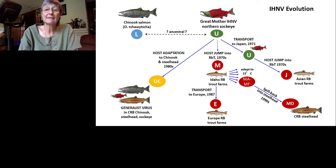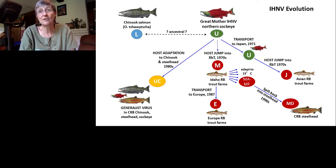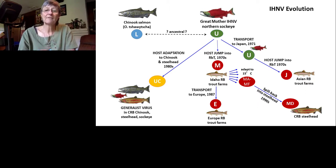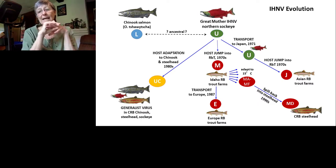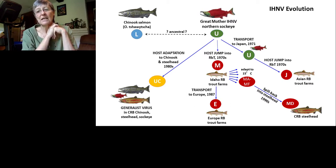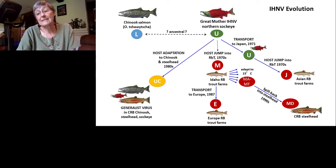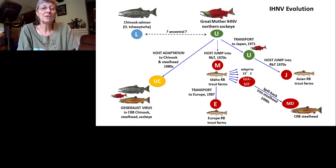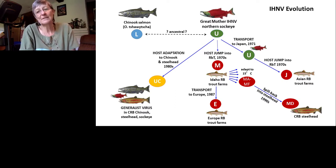The U virus was independently transported to Japan in 1971, leading to a separate host jump into rainbow trout forming the J genogroup — now seen in Japan, Korea, and China. The M virus was transported to Europe and evolved independently into the E genogroup, specific to rainbow trout farms in Europe. We also see a spillback event where M virus evolved in rainbow trout farms and spilled back into steelhead in the 1990s. Lastly, we have evidence that the U genogroup has also adapted to Chinook and steelhead, forming the UC subgroup — a generalist that occurs in Chinook, steelhead, and sockeye and has become very successful in the Columbia River Basin.